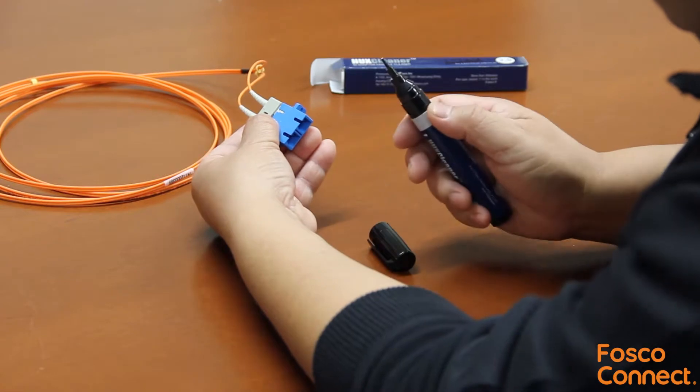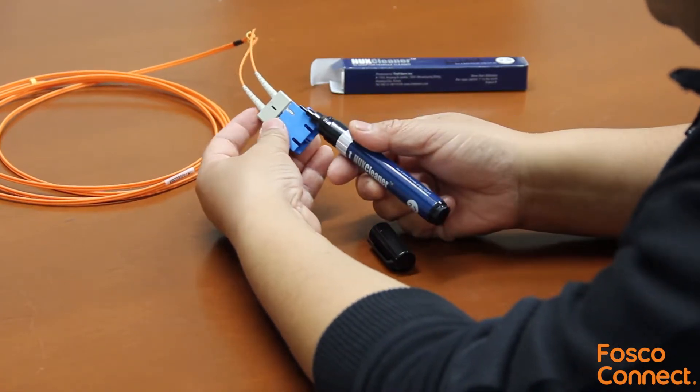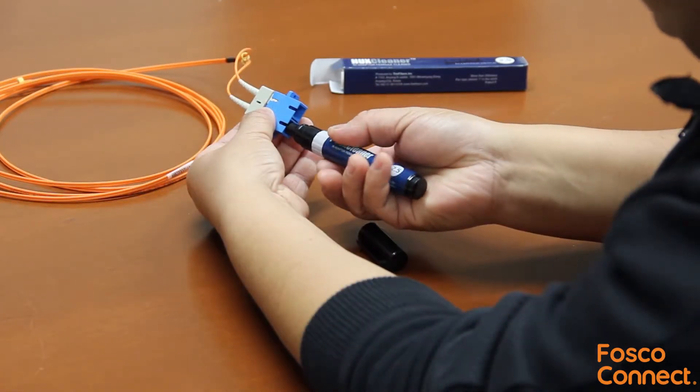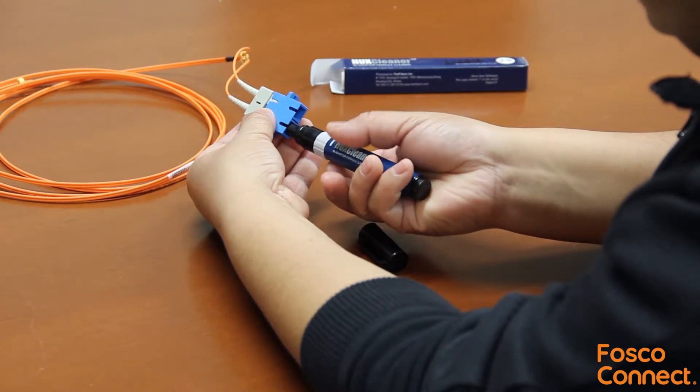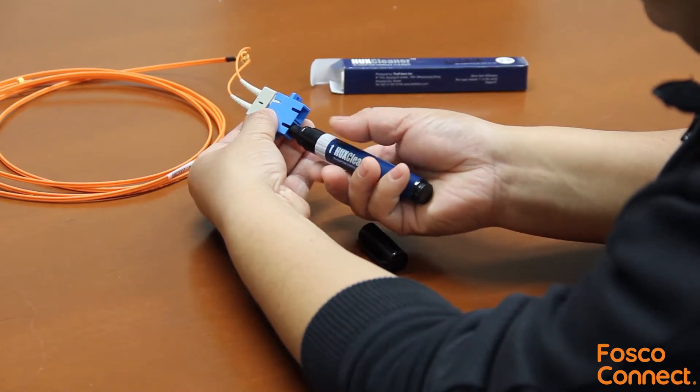Don't push too hard, and don't turn more than two rotations for each cleaning. For better results, you can also rotate the whole pen for a few circles. That should get your connectors cleaned within the adapter.